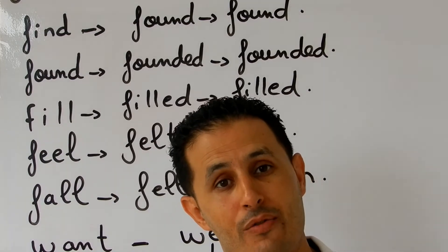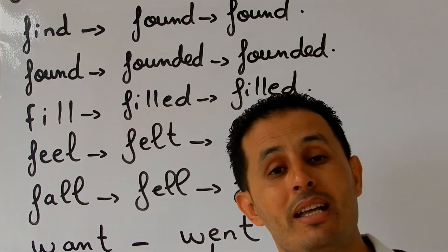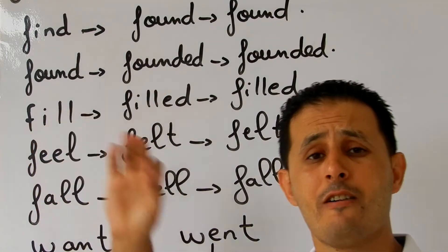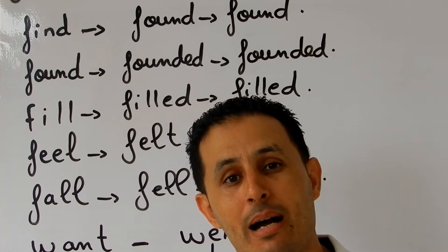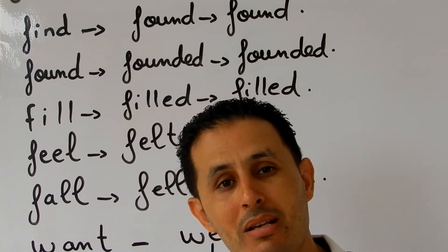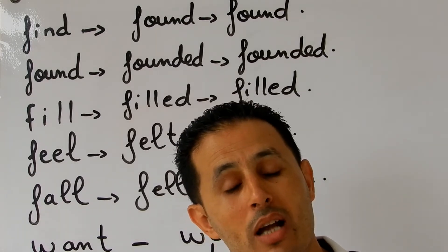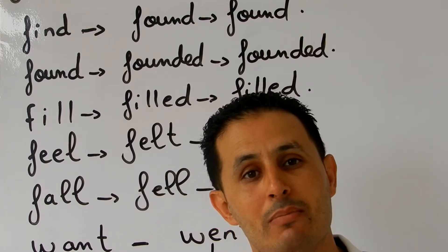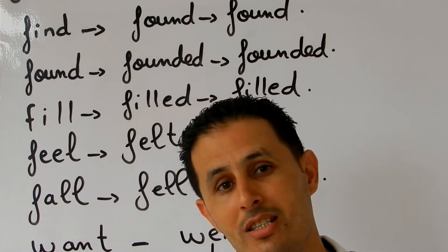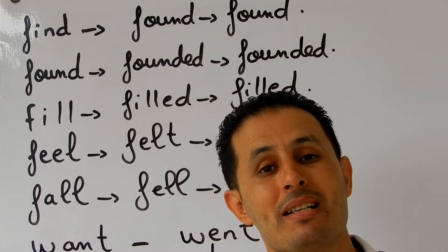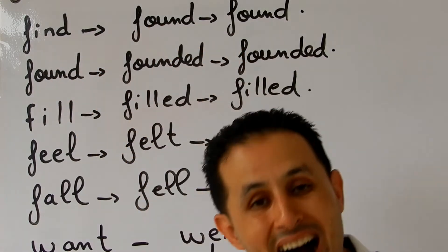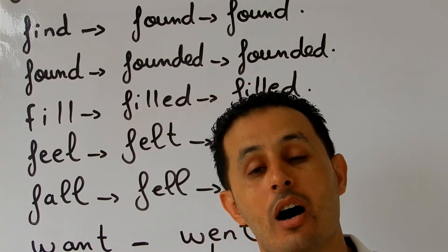Now look at the verb 'found' — this is a different word. 'Found' here is a regular verb meaning to set up or to establish. Example: we can found an institution, we can found a school. It means we come up with a school from nothing, from scratch — we build it for the first time. So 'found' is a regular verb: the simple past is 'founded' and the past participle is 'founded.'